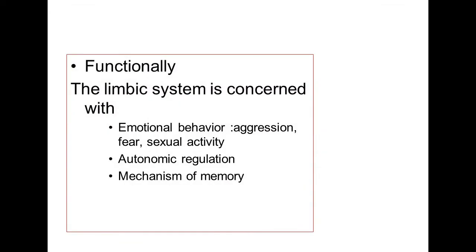Functionally speaking, this system is very important because it is concerned with specific functions like emotional behavior — aggression, fear, fighting, sexual activity, sexual arousal, and autonomic regulation of body functions. It is also concerned with mechanisms of memory, like short-term memory and remote memory, and even some sort of intellectual performance, as some authors say.